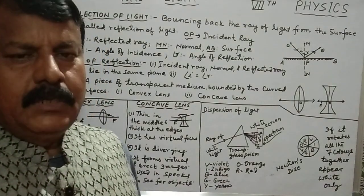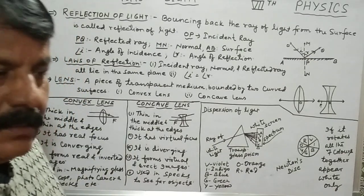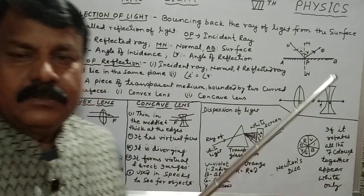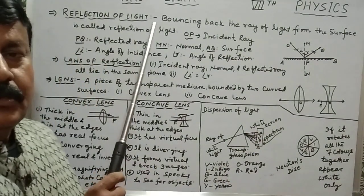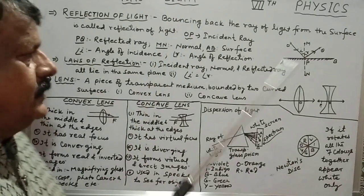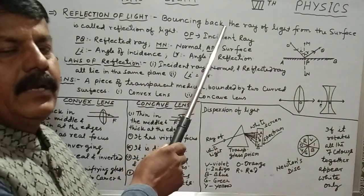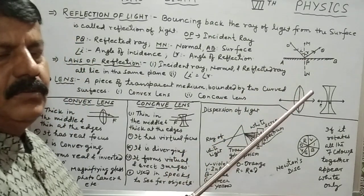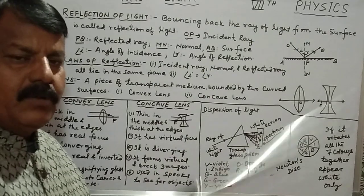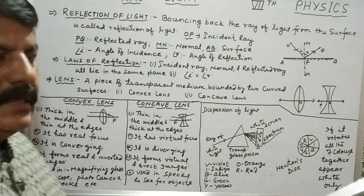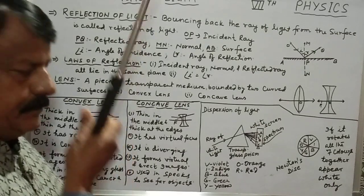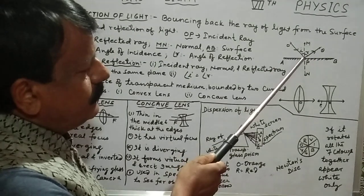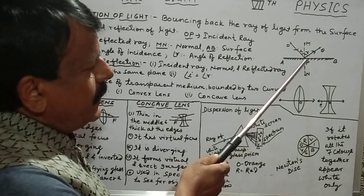Hello students, today we will discuss the remaining part of the light chapter. First, we are going to start from reflection of light. What is the reflection of light? It is the bouncing back of a ray of light from the surface. A ray of light which is falling on the surface and bouncing back from there is known as reflection of light. In this figure you can see a light ray falling on the surface and bouncing back.